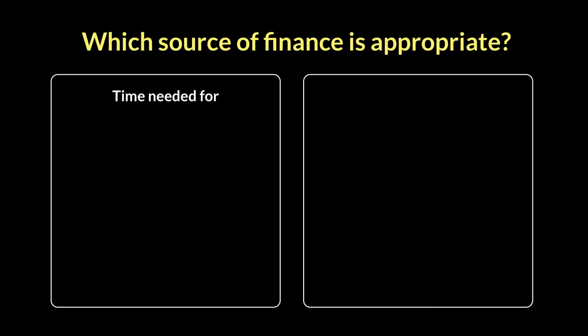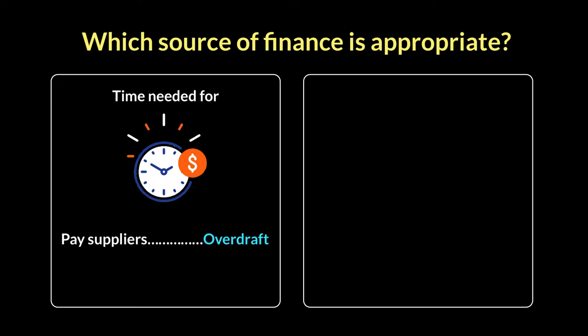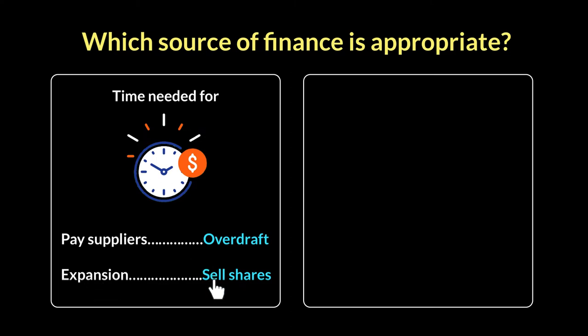The first of those is the time that your finance is needed for. If it's something you need to pay your suppliers for, then a short-term source of finance is used, because it's something that comes up weekly or monthly. Perhaps using a short-term source like a bank overdraft is more advisable. Compare that to buying land or a building for expansion — that requires large sums for a big investment project, where selling shares on the stock exchange may be appropriate. If it's a short-term need, go for a short-term source; if it's long-term, go for a long-term source.